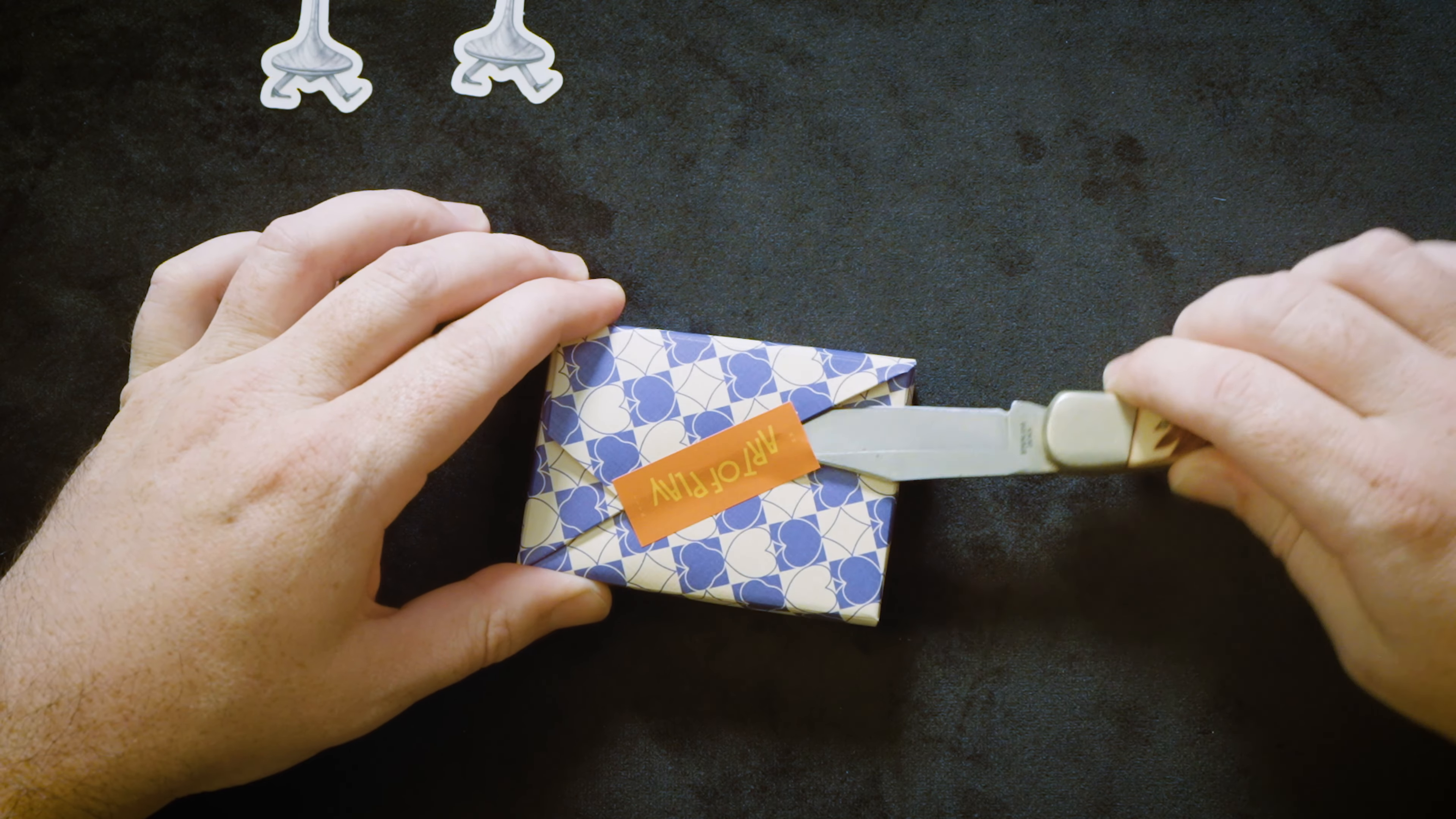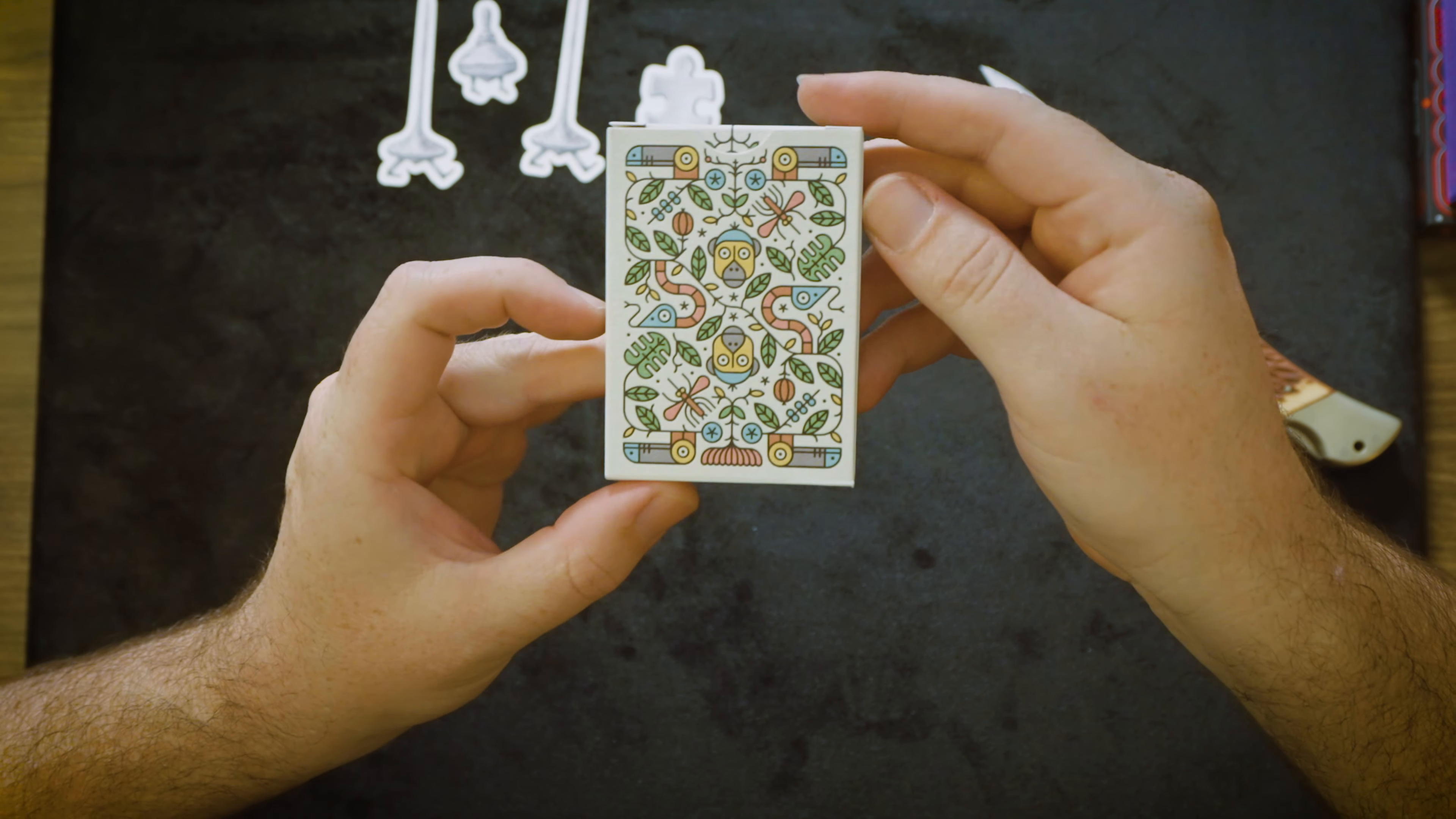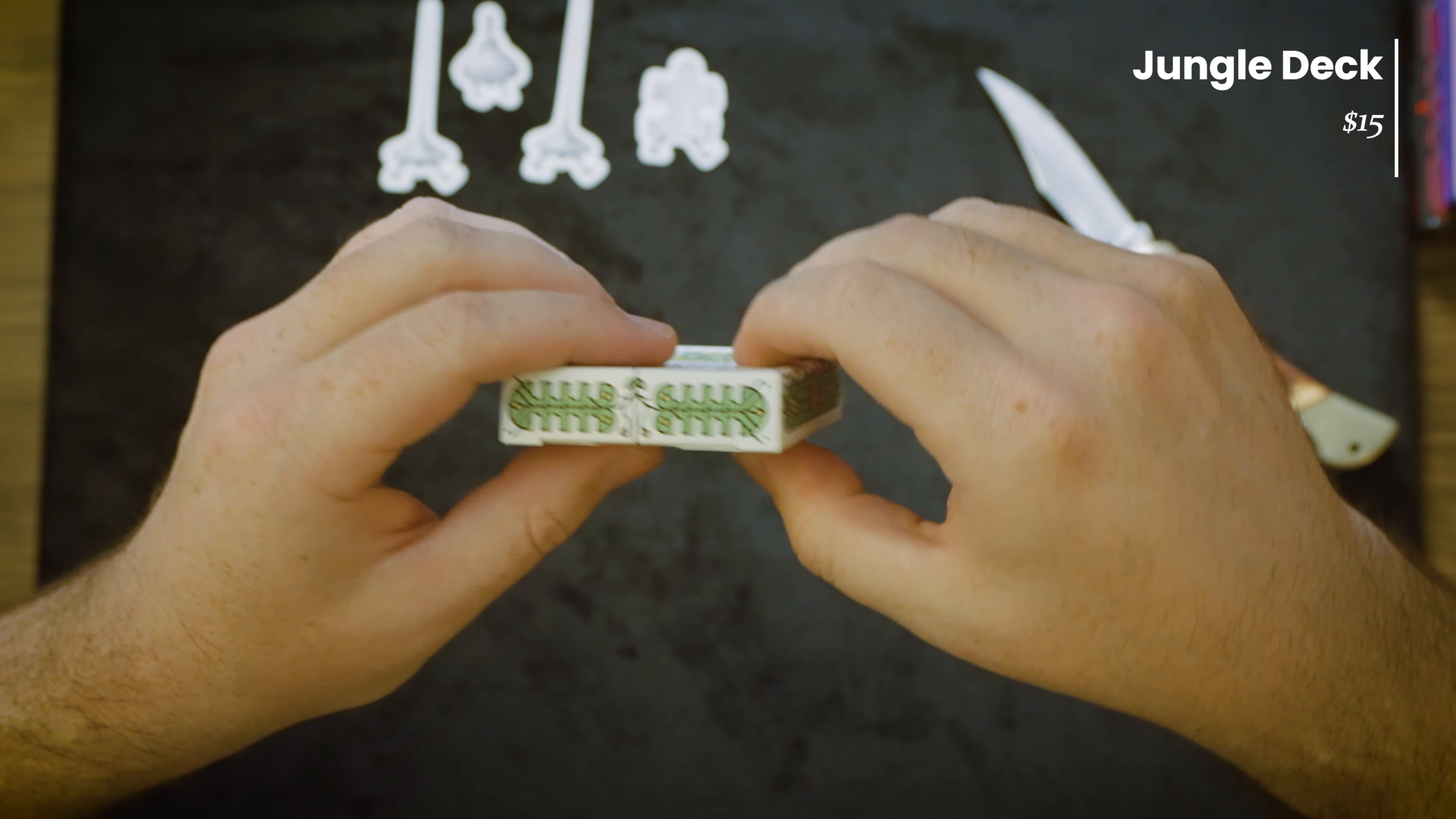Number four. Oh, nice. Jungle playing cards. Art of Play. Very cool. I like this design too. That's cool. I imagine that's what the cards are. Illustrated by Murthy. Art of Play. Very cool illustrations.